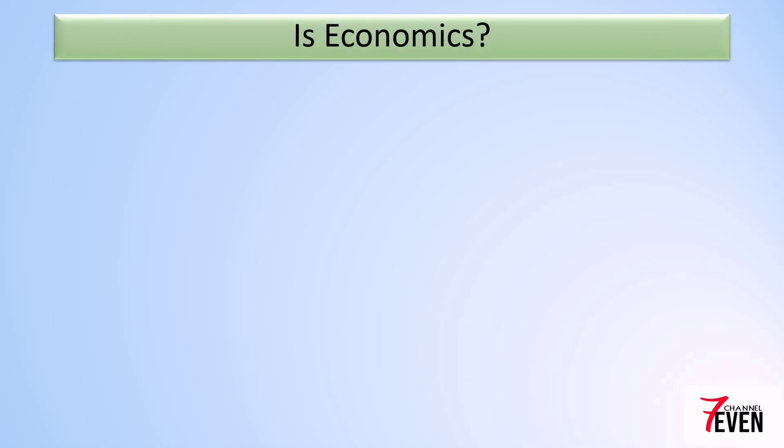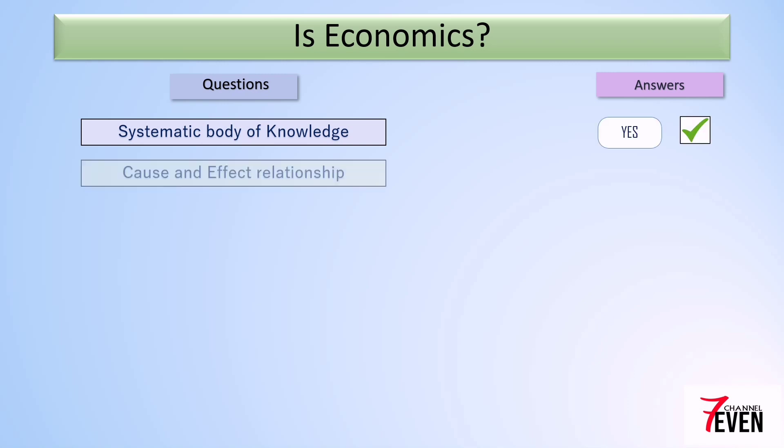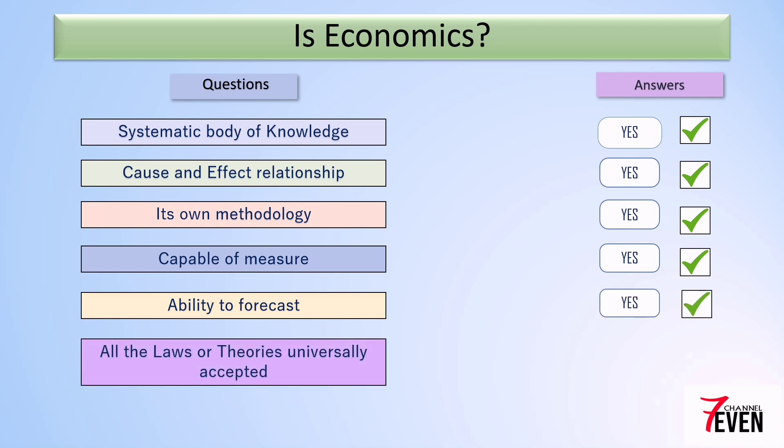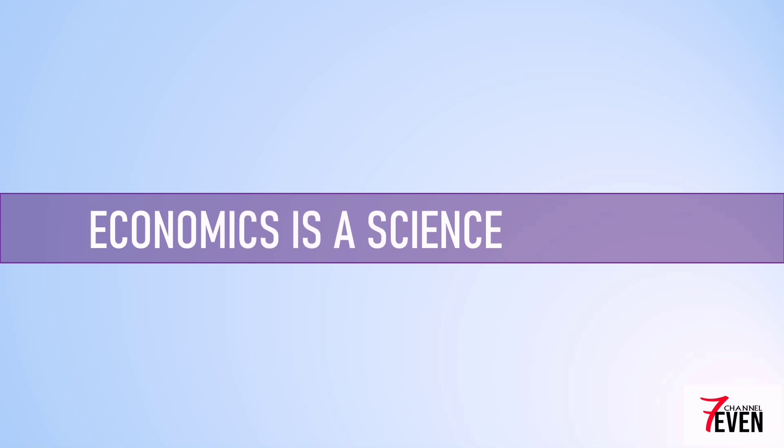Let's find out whether we can see those parameters in economics or not. Is economics a systematic body of knowledge? Yes. Is there a cause and effect relationship? Yes. Does it have its own methodology? Yes. Is it capable of measurement? Yes. Does it have the ability to forecast? Yes. Are all the laws and theories universally accepted? Yes. If economics is a science, there is no doubt about that - economics is a science.